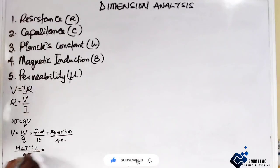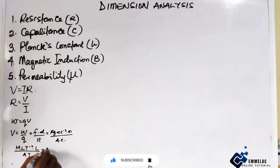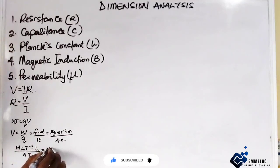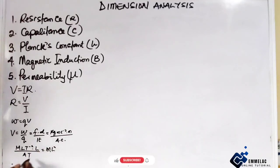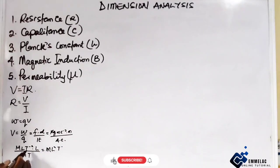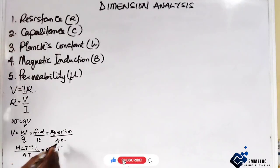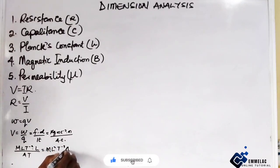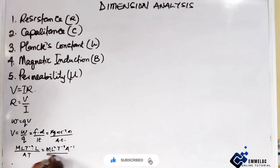Dimensionally, we have mass M, this is length L, then time T to the power of minus 2, that's another length L, all over A then T. Solving this, we have M, L times L gives us L raised to the power of 2, then T raised to the power of minus 3 (since minus 2 and minus 1 give minus 3), then A raised to the power of minus 1. This is the dimensional formula for potential difference.